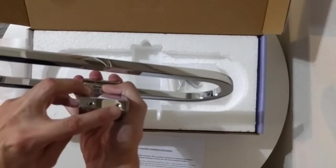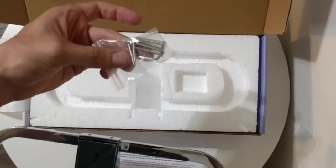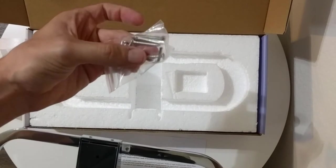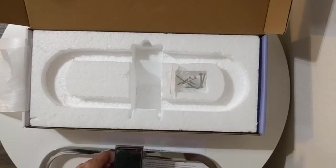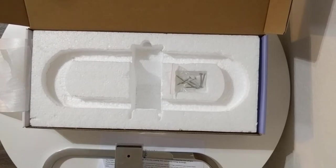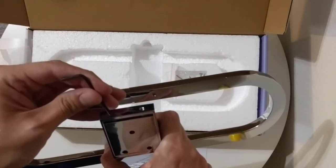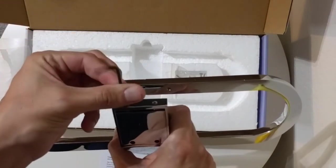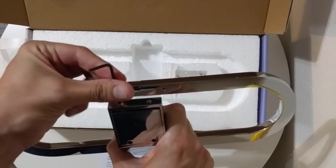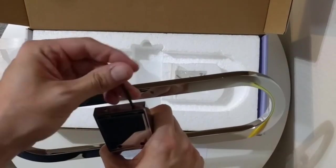First, we will need to remove the mounting plate from the back of the bar using the included Allen wrench. You don't need to remove the hex screws all the way, just enough to free the plate.